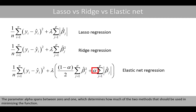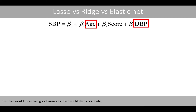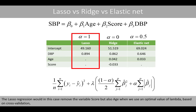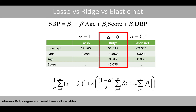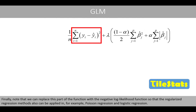This is where Elastic Net regression comes in, which includes the best of LASSO and Ridge regression. The parameter alpha spans between zero and one, which determines how much of each of the two methods should be used in minimizing the function. For example, if we had a third explanatory variable representing the diastolic blood pressure, which is expected to be a good predictor of systolic blood pressure, then we would have two good variables that are likely to correlate and one useless variable. LASSO regression would remove the variable score, but also age, when using an optimal value of lambda based on cross-validation. Ridge regression would keep all variables. For certain values of alpha and lambda, the Elastic Net would keep both age and diastolic blood pressure and delete the useless variable math score. Note that we can replace the sum of squared residuals part of the function with the negative log-likelihood function, so that the regularization regression methods can also be applied in, for example, Poisson regression and logistic regression.